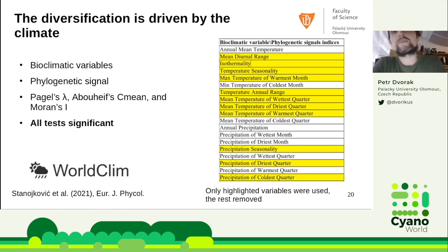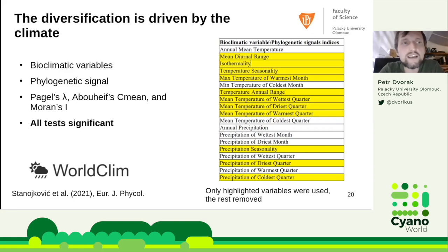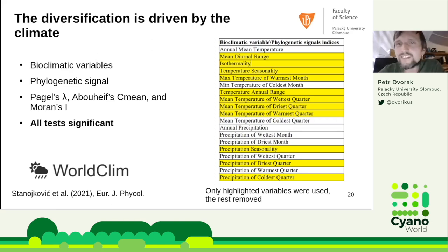Geography plays a role, but what about climate? We took bioclimatic variables from the WorldClim database and tested if they show a phylogenetic signal — meaning, if more closely related samples have more similar climatic variables. We used several measures including Pagel's lambda, Abouheif C-mean, and Moran's I, and all tests were significant. Some variables were autocorrelated, so we removed them. Everything is detailed in the recent paper of my student Alexander, who was responsible for this part.